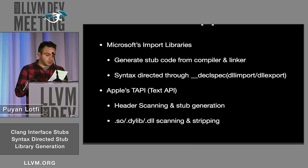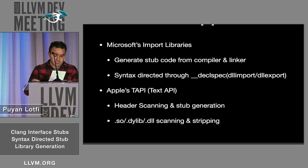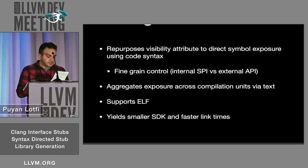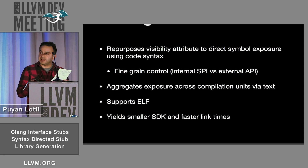Prior art in this space includes Microsoft's import libraries, where DeclSpec DLL import and DLL export are used to denote what gets exposed, as well as Apple's text-based API, where API headers are scanned to produce a text format that the Darwin linker is able to link against. Clang Interface Stubs is inspired by these ideas. Visibility attributes are used to enforce explicit control over exported interfaces.